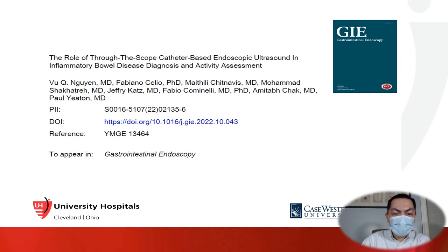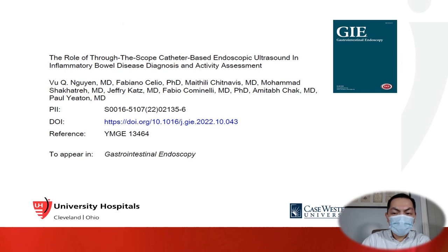In this study, we evaluate the role of endoscopic ultrasound in differentiating the diagnosis of Crohn's disease from UC and healthy controls. It has been well described on surgical pathology that Crohn's disease is characterized by transmural inflammation, while UC involves inflammation of the superficial layer, primarily involving only the mucosa.